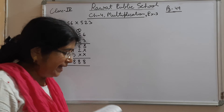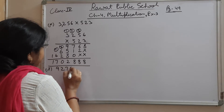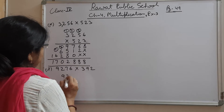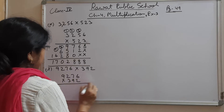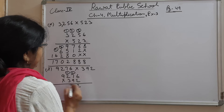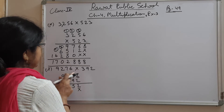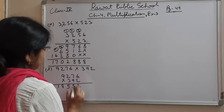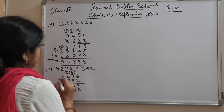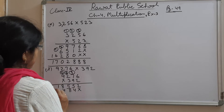Now question L. In L we have 9276 × 392. Let's multiply: 2×6=12, 1 carry over; 2×7=14, plus 1=15, 1 carry over; 2×2=4, plus 1=5; 2×9=18. For the tens place, cross the ones place: 9×6=54, 5 carry over; 7×9=63, plus 5=68, 6 carry over.